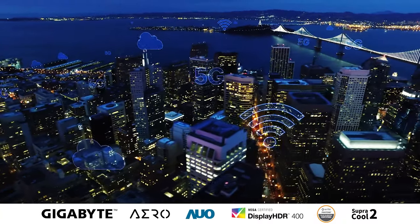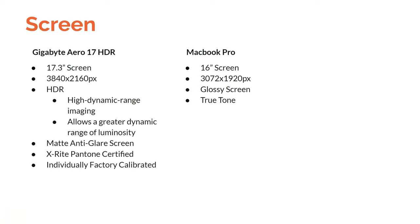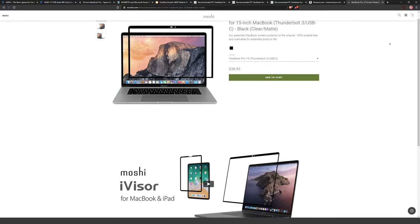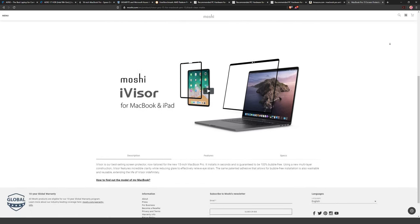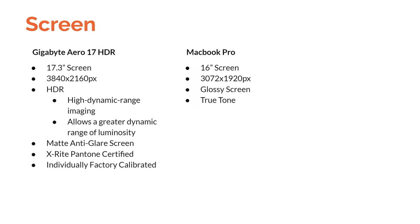Another big difference: the Gigabyte has a matte anti-glare screen while the MacBook has a glossy screen. If you work near windows or sources of light where glare is a problem, the Gigabyte screen will probably be a better bet. The perk of a glossy screen is that images look really vivid — much like a high-quality glossy photo print — which is probably why Apple still uses it, though you can also purchase anti-glare covers for the MacBook Pro.